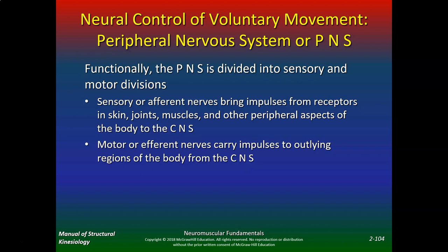Neural control of voluntary movement — the peripheral nervous system, or PNS. Functionally, the PNS is divided into sensory and motor divisions. Sensory, or afferent, nerves bring impulses from receptors in skin, joints, muscles, and other peripheral aspects of the body to the central nervous system. Motor, or efferent, nerves carry impulses from the central nervous system to outlying regions of the body.